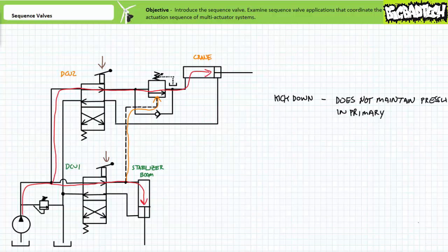Variations of sequence valves called kickdown style sequence valves exist that exhibit similar yet subtly different behavior. When a regular sequence valve shifts open, it maintains pressure in the primary circuit. Kickdown sequence valves, when shifted to the open position, shift and stay open like a regular valve, yet do not maintain pressure on the primary circuit. This could be advantageous for circuits in which efficiency is a prime consideration. While maintaining pressure in the primary circuit, there would exist a significant pressure differential across the sequence valve until pressure in the sequenced cylinder equalized. A kickdown sequence valve does not maintain pressure in the primary circuit — when actuated, it just opens up and stays open, and pressure in the whole system drops to whatever it took to actuate the sequenced actuator.